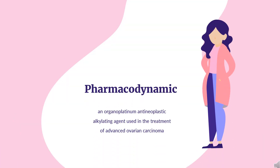Pharmacodynamics. Carboplatin is an organoplatinum antineoplastic alkylating agent used in the treatment of advanced ovarian carcinoma. Carboplatin has a long duration of action as it is given every 4 weeks and has a narrow therapeutic index. Patients should be counseled regarding bone marrow suppression and anemia.